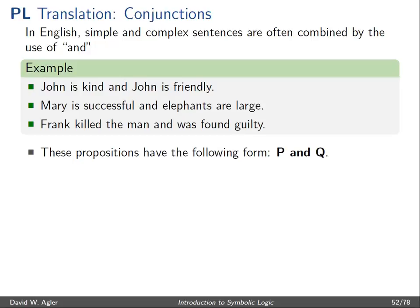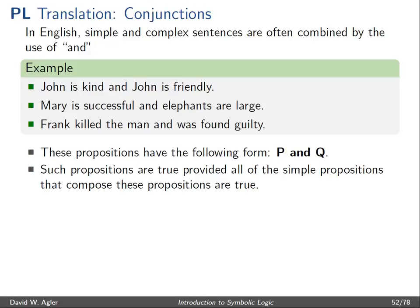These propositions seem to have the following form: where P and Q are simple sentences, or they could be complex, they have the form P and Q. These types of propositions are true provided all of the propositions that compose the complex proposition are true. The expression P and Q is true just in the case that P is true as well as Q is true.